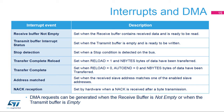Several events can trigger an interrupt. The Receive Buffer Not Empty flag is set when the receive buffer contains received data and is ready to be read. The Transmit Buffer Interrupt status is set when the transmit buffer is empty and ready to be written. The Stop Detection flag is set when a stop condition is detected on the bus. The Transfer Complete Reload flag is set when the Reload Bit is set and Nbytes of data have been transferred. The Transfer Complete flag is set when the Reload and Auto End bits are cleared and Nbytes of data have been transferred. The Address Match flag is set when the received slave address matches one of the enabled slave addresses. The NACK Reception flag is set when a Not Acknowledge is received after a byte transmission. DMA requests can be generated when the Receive Buffer Not Empty or Transmit Buffer Empty flag is set.